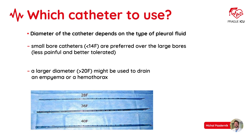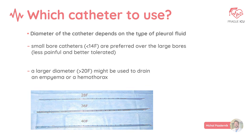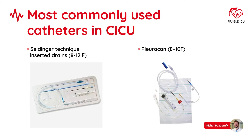For ultrasound visualization you can use either a convex abdominal probe or the classical cardiac probe. Which catheters are available for thoracosynthesis? Preferably you should use small bore catheters over the large ones as they are efficient, safe and better tolerated by the patient. Large bore catheters should be used for drainage of empyema or hemothorax.